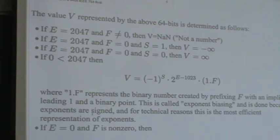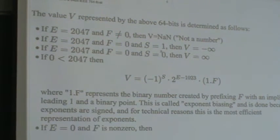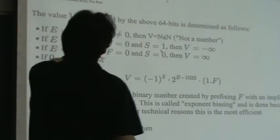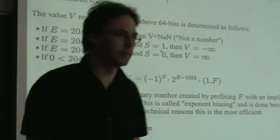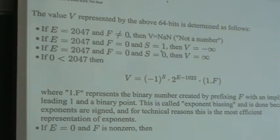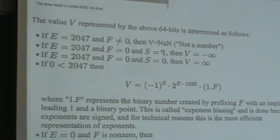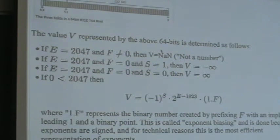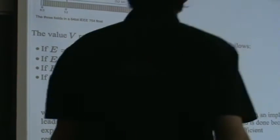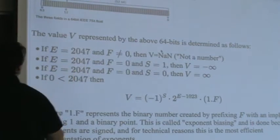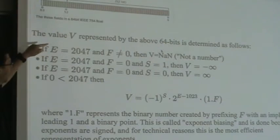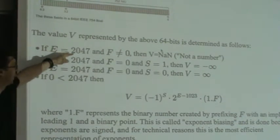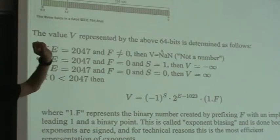When you type in a double precision floating point number, the computer stores that 64-bit word. Here's a precise description of how to go from a sequence of 64 bits to an actual double precision number. There are a couple of special cases: there's a NaN (not a number) case, which corresponds to E — the exponent part — being the binary number 2047 and the fraction part being non-zero.